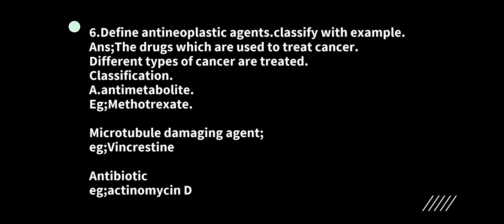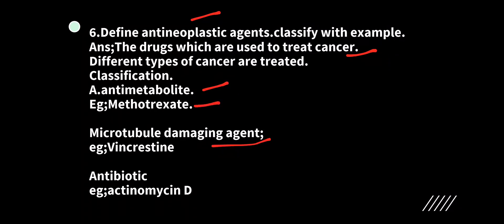Next: define anti-neoplastic agents and classify with examples. Anti-neoplastic agents are drugs used to treat cancer. Different types include: anti-metabolites — example, methotrexate; microtubule-damaging agents — example, vincristine. Some antibiotics also treat cancer, like actinomycin.